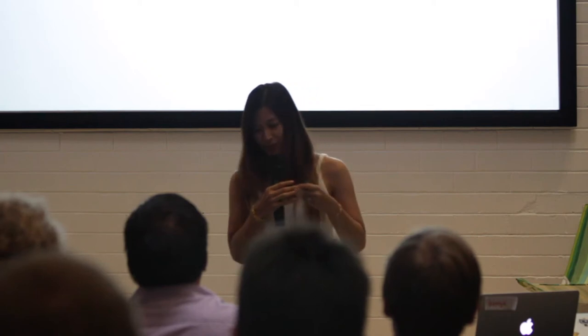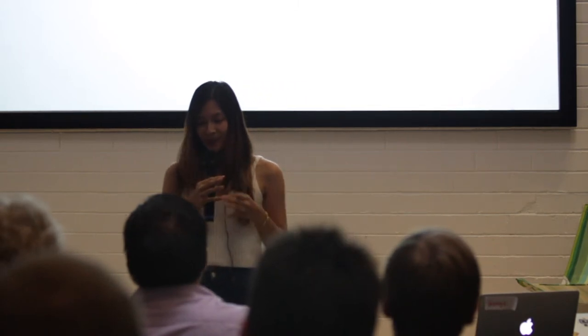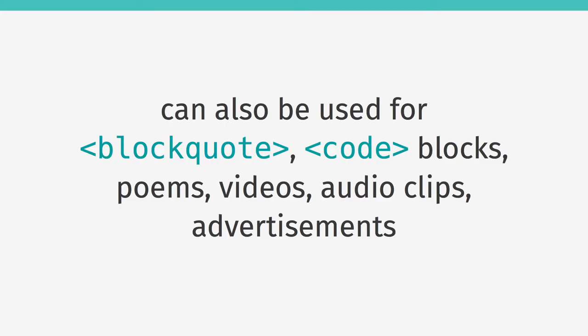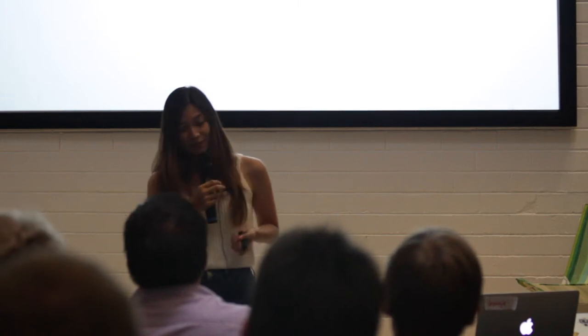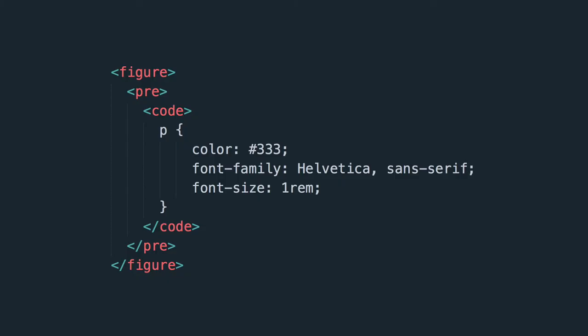Figures are referenced from the content but they're not a part of it. So you shouldn't be using figure when you've got text like 'see the image below' or 'see the image to the left,' because that means if you were to move the figure, the copy would no longer make sense. Interestingly, although you use figures for images, they can also be used for block quotes, code blocks, even poem excerpts, videos, audio clips, and advertisements.